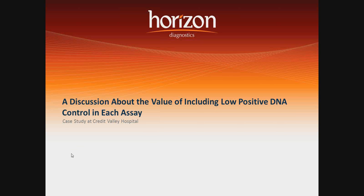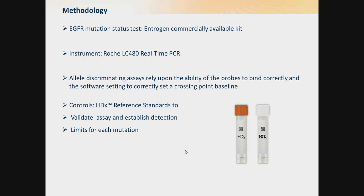Now I'd like to introduce some work done at a molecular diagnostic lab in Credit Valley Hospital, which looks at the value of including a low positive DNA control in each assay they run. We will focus on their EGFR mutation status testing, for which they use a commercially available kit from Entrogen. This is a real-time PCR assay run on their real-time light cycler platform.